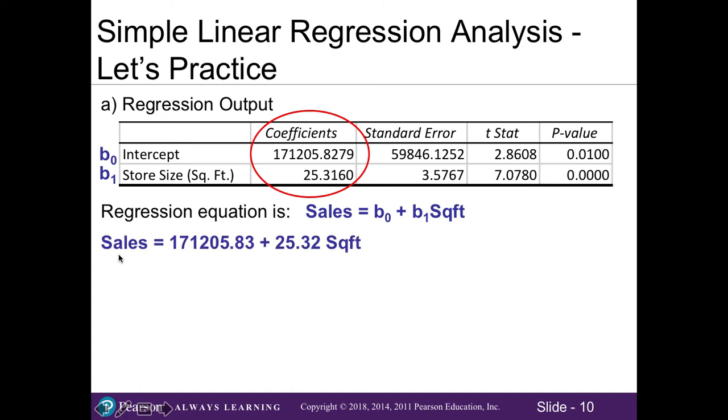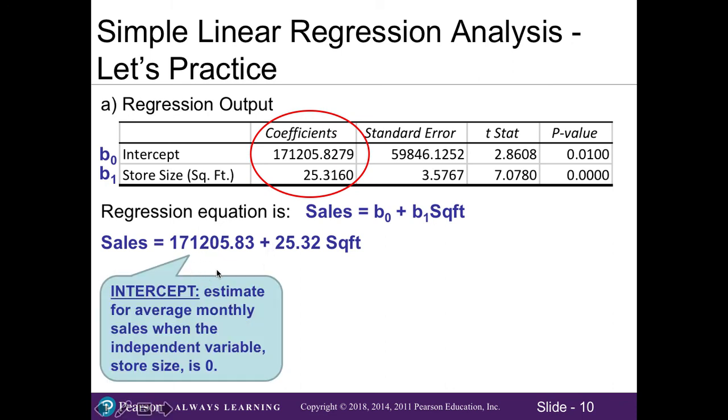We are hoping to see how much of this variable can explain our average monthly sales. So plugging in our coefficients, my b₀ and my b₁, we get that the average monthly sales for our regression equation is 171,205.83 plus 25.32 for the slope of our square feet. Note that we have a positive if our slope is positive, in that there's no negative symbol here. If there had been a negative symbol, we would change this to a minus. Now what does this mean? We need to interpret each piece. First, our intercept - this is the estimate for our average monthly sales when our independent variable x, store size, is 0. We know it's not possible to have a store size of 0 square feet, so we don't actually need to interpret the intercept too much in this scenario.